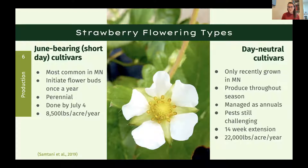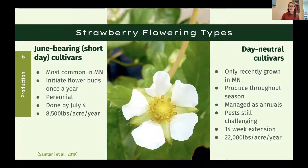Day neutral cultivars have only recently been grown in Minnesota. They're less cold tolerant but produce throughout the season, so we manage them as annuals to work around that. They do have more pest challenges due to their longer season, but we get an average of 14 weeks of season extension, resulting in 22,000 pounds per acre per year for in-ground day neutral cultivars — a quite significant increase over june bearing.